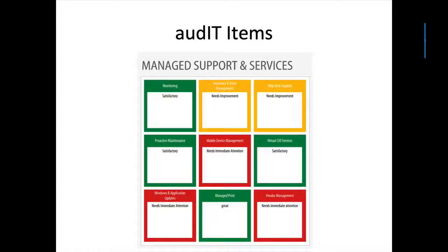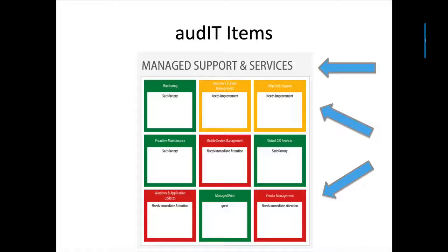Here are your audit items. This is managed support and services, with nine audit items. Each audit item has a name — for example, monitoring — and then it has a summary statement, such as 'satisfactory.' You can create your own custom summary statements or use our system summary statements. The system summary statements are 'needs improvement,' 'satisfactory,' and 'needs immediate attention' — those are available in every audit. If you don't know what else to say, just use those.